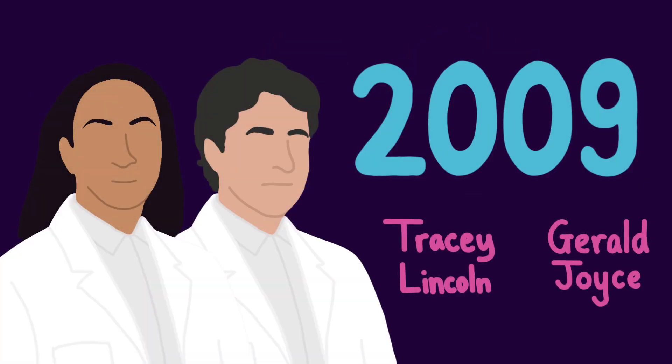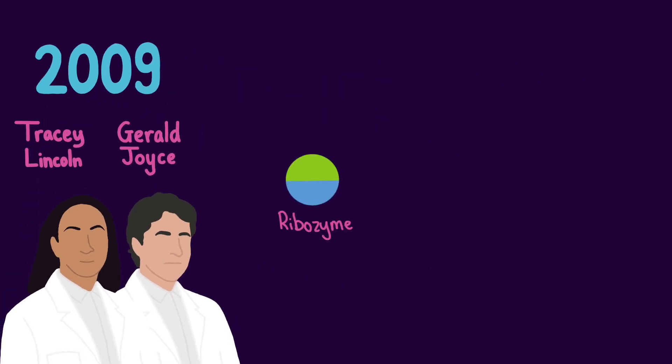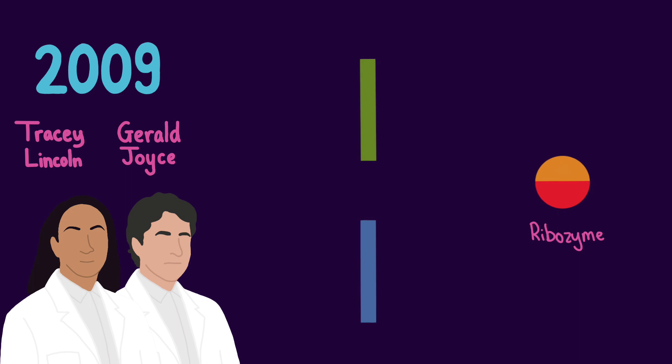Indeed, in 2009, Lincoln and Joyce managed to construct a pair of cross-replicating RNA enzymes that indefinitely catalyze the synthesis of each other from oligonucleotide substrates and undergo recombination.